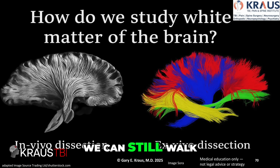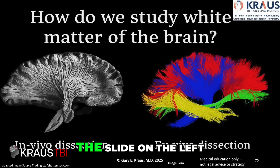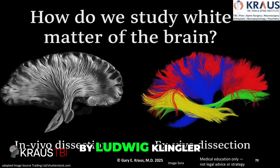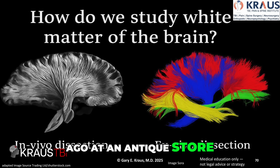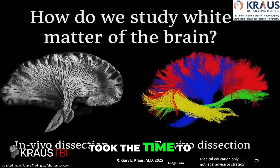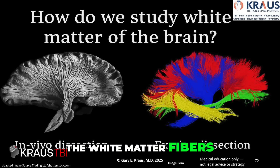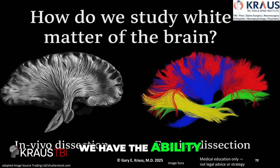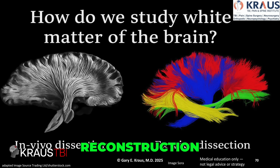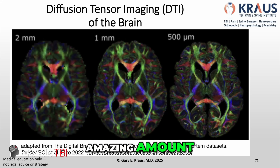It's not obvious — we can still walk and talk and move. The anatomy of the brain is interesting. The slide on the left shows a book about 70 years old by Ludwig Klingler — a beautiful book I got years ago at an antique store. This anatomist took the time to micro-dissect all of the white matter fibers in the brain — that's called in vivo. Now we have the ability, ex vivo, using imaging, computer modeling, and reconstruction, to do an amazing amount.